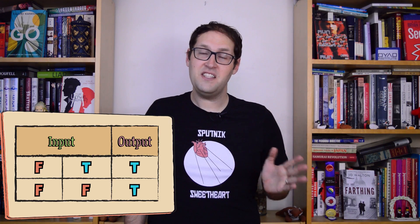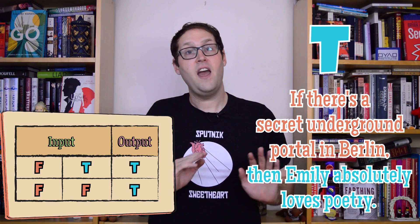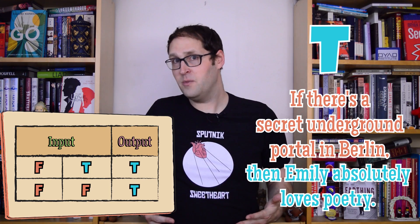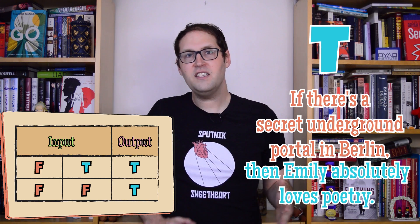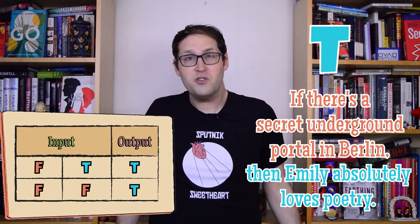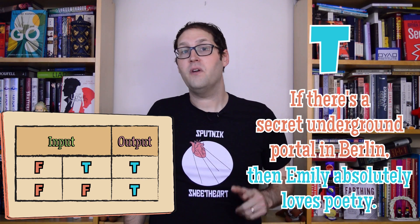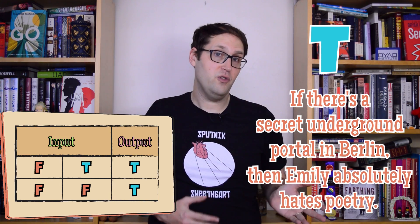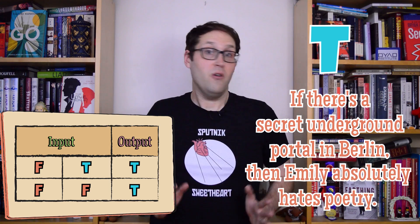But this theory starts to make weird predictions when you exploit the fact that putting any false sentence in the if-half renders the whole thing true, no matter what the second then-half says. Take the statement, "if there's a secret underground portal in Berlin, then Emily absolutely loves poetry." Because we can be reasonably sure no such portal exists, according to our table, the whole thing is guaranteed true. But it doesn't really feel true, at least not without a whole lot of context — what do clandestine German gateways have to do with a person's reading habits? There's no obvious causal connection there. What's worse is that even if you could imagine a way for the two ideas to connect up, because the first sentence is still false, the opposite also comes out true: "if there's a secret underground portal in Berlin, then Emily absolutely hates poetry." So, how can we fix this mess?